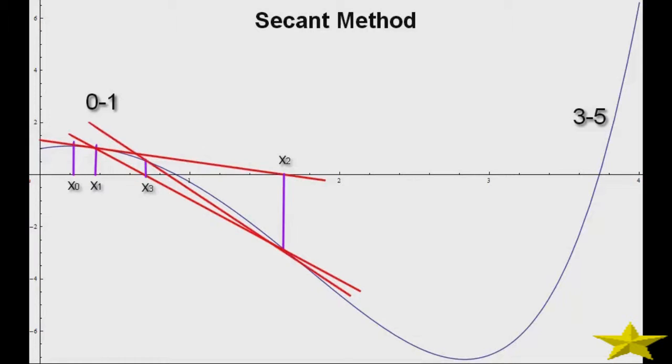Now draw another line that joins x3 on the function and x2. We get x4 on the x-axis. Find the function again at x4. Proceeding in this way, you're getting closer to your target point.